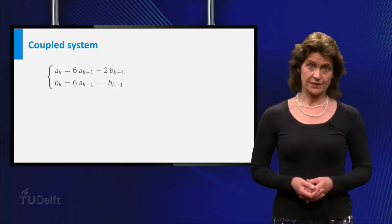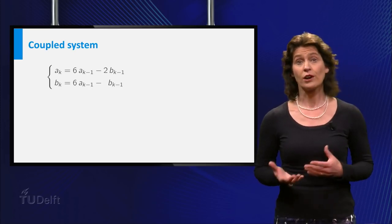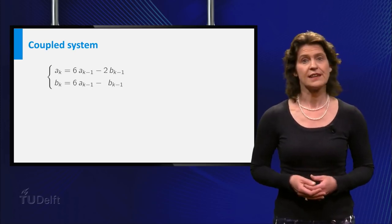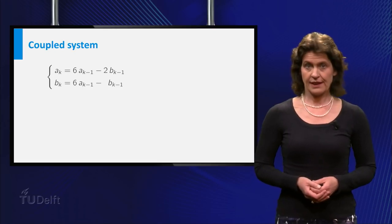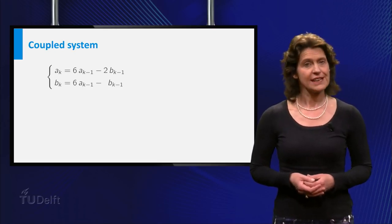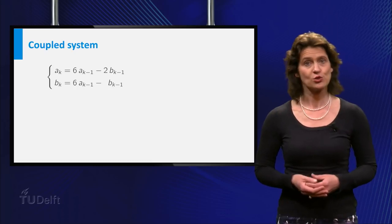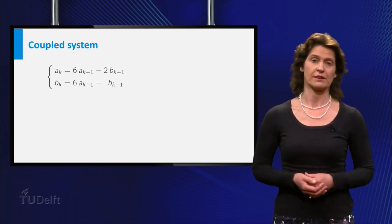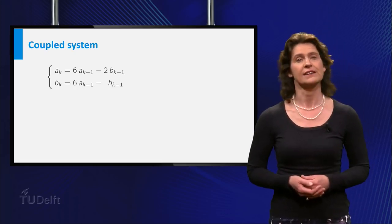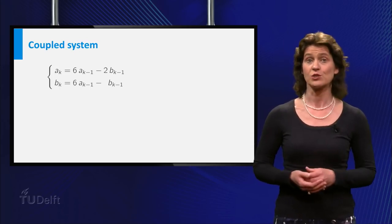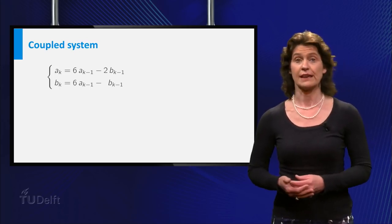In another situation, the recurrence relations could be more complicated. For instance, they might look like this. Ak is equal to 6 times Ak-1 minus 2 times Bk-1. And Bk is equal to 6 times Ak-1 minus Bk-1.